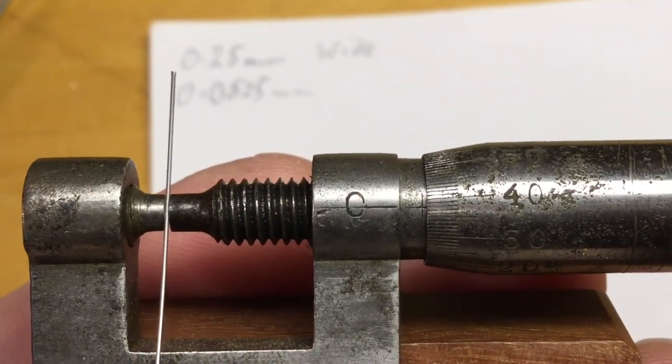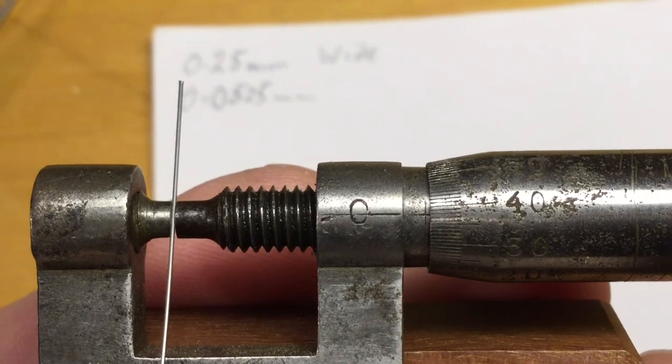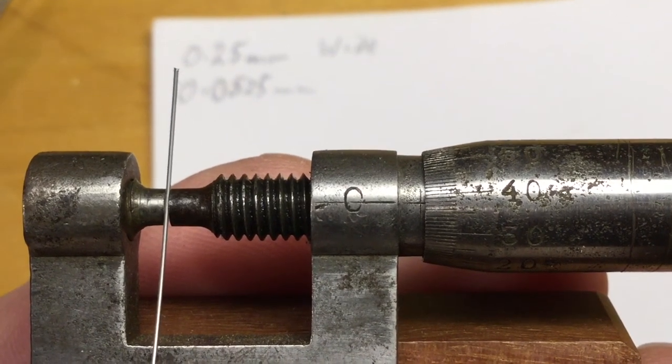The round wire I'm using is 0.38 of a millimetre in diameter, so we've got to bring that down.